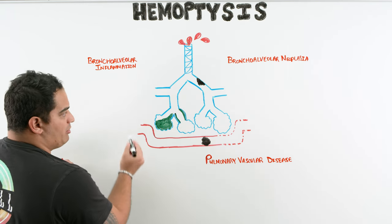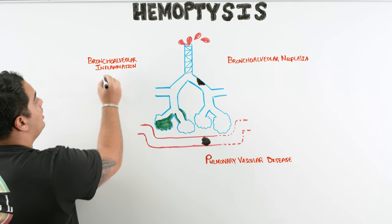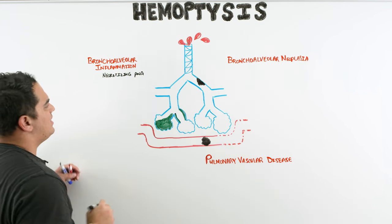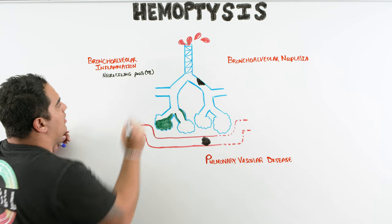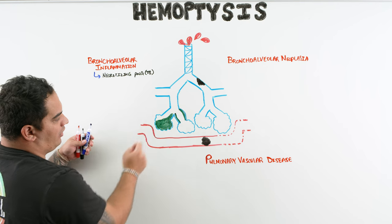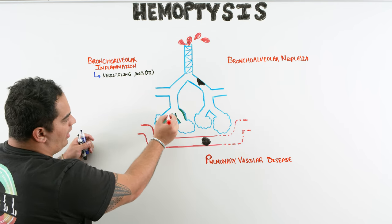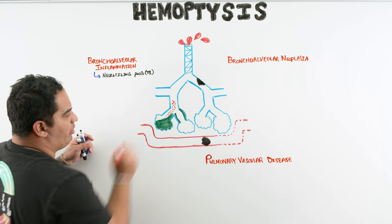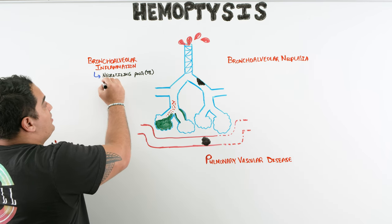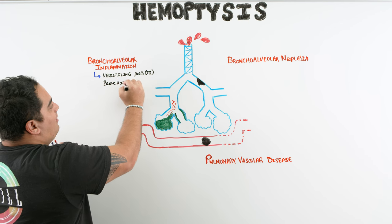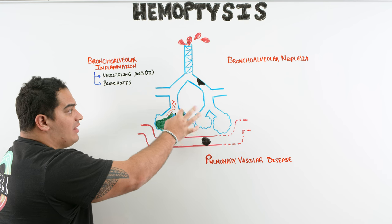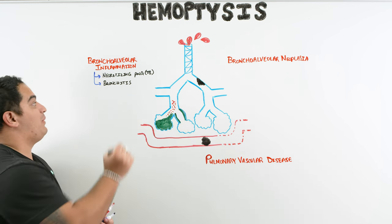One cause of bronchoalveolar inflammation is pneumonia — particularly necrotizing pneumonia. Tuberculosis is a relatively common cause of significant hemoptysis. If a patient has an infection in the bronchoalveolar area that erodes into the bronchial artery, blood leaks into the bronchial airways and triggers irritation, causing them to cough it up. Another really common etiology is acute bronchitis. Also, dilation of airways with lots of inflammation causing erosion — that's bronchiectasis.